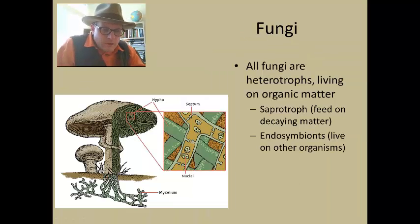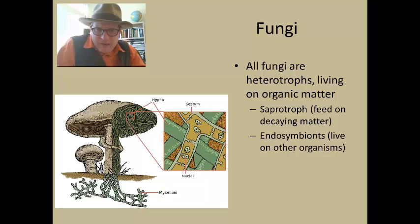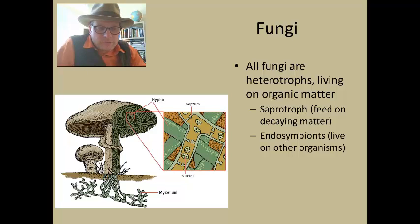All fungi are heterotrophs, meaning they live on organic matter. They fall into two feeding groups: saprotrophs, which feed on decaying matter such as decaying leaf matter, a peach, or a piece of bread; and endosymbiotes, which live on other organisms — mostly on plants in the fossil record — but also on living organisms like insects and even people.